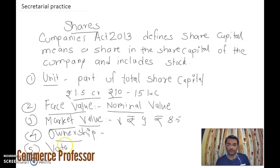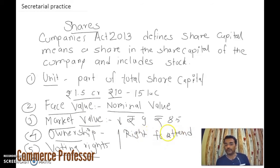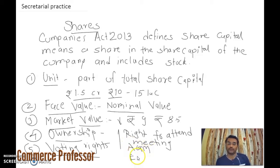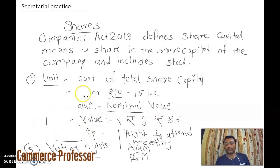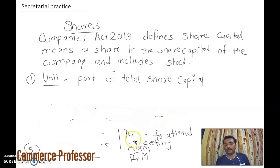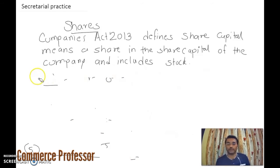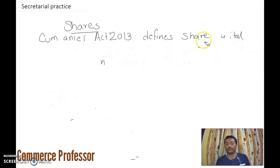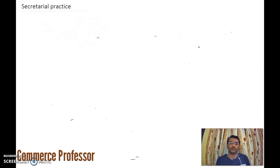The fifth feature is voting rights. In a company's operations, for all big and small decisions taken, shareholders are involved. They have the right to attend meetings of the company, and their voices, views, and opinions are considered for whatever decisions are taken by the company.